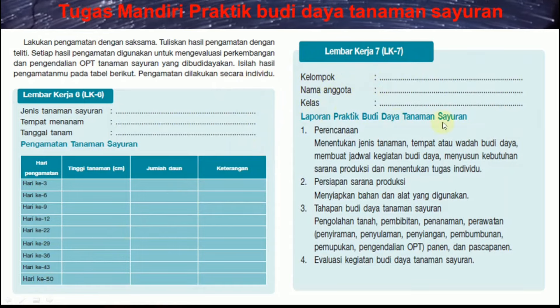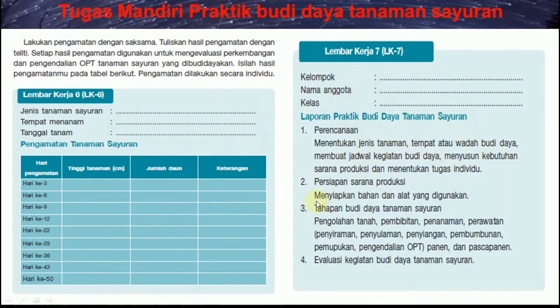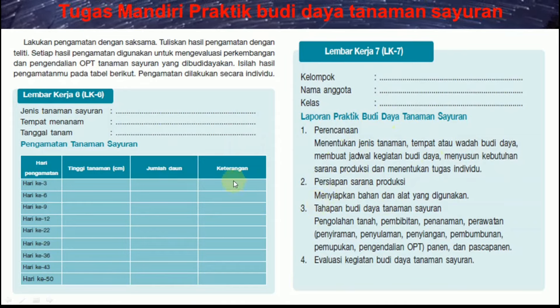Lembar kerja LK7 ini untuk laporan praktik budidaya tanaman sayuran. Jadi anak-anak nanti dikumpulkan ada 3 LK, yaitu LK5, LK6, serta LK7.